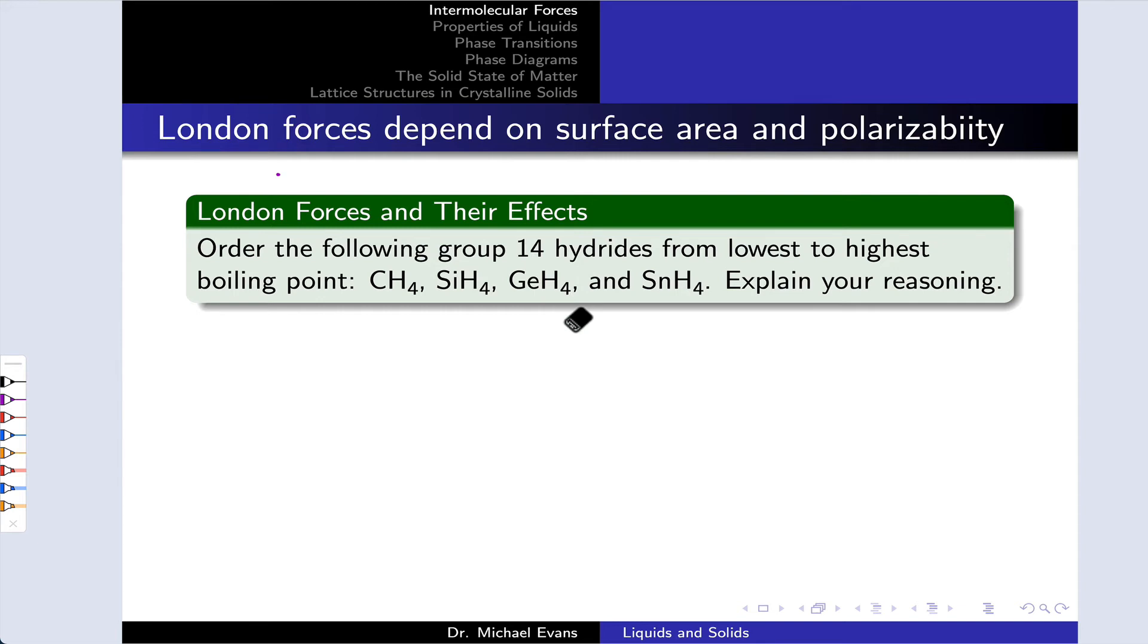In this practice problem, we're asked to order the following group 14 hydrides from lowest to highest boiling point and provide a rationalization, essentially. The first thing you should do when confronted with a question like this about boiling point or melting point, the dependence of some physical property on structure, is think about intermolecular forces in the condensed phase. Boiling going from liquid to gas is going to depend profoundly on the strengths of intermolecular forces in the liquid phase. The key difference is really the next thing to look for. What is the structural difference that's going to give rise to differences in intermolecular forces in the series you're given?